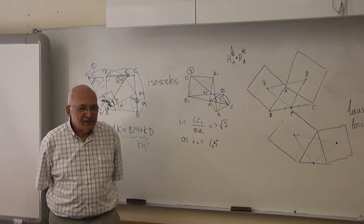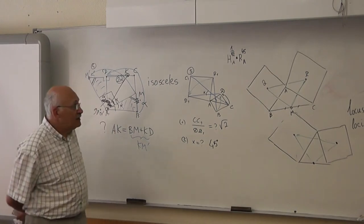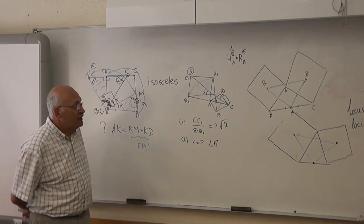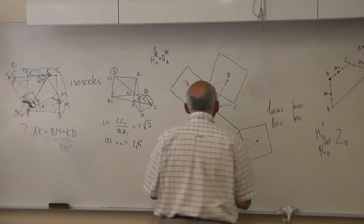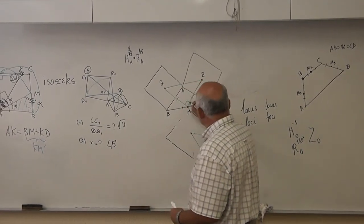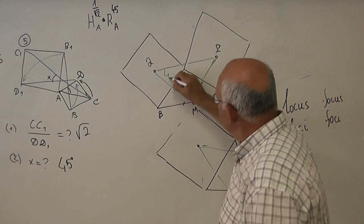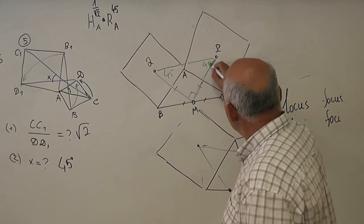Isosceles, yeah. Isosceles and right. Right, isosceles triangle. 45, 45, 90.